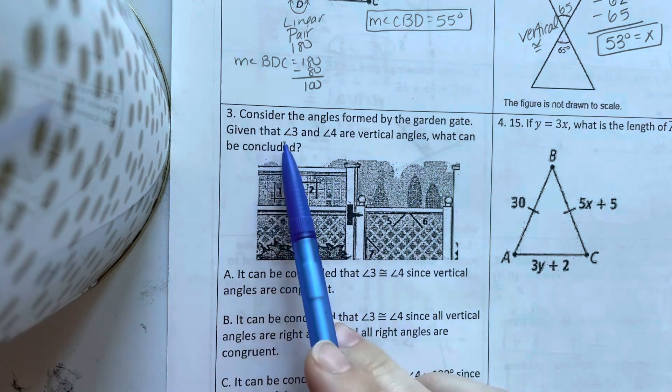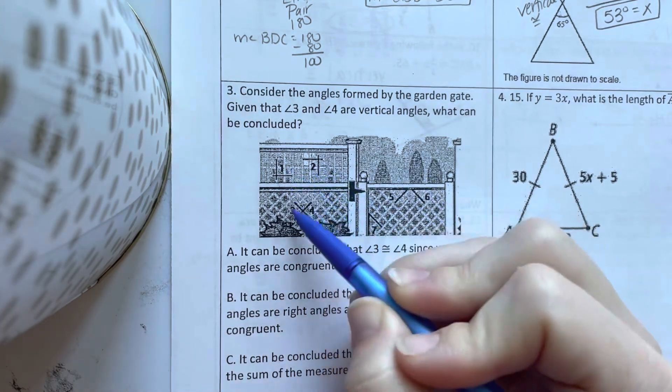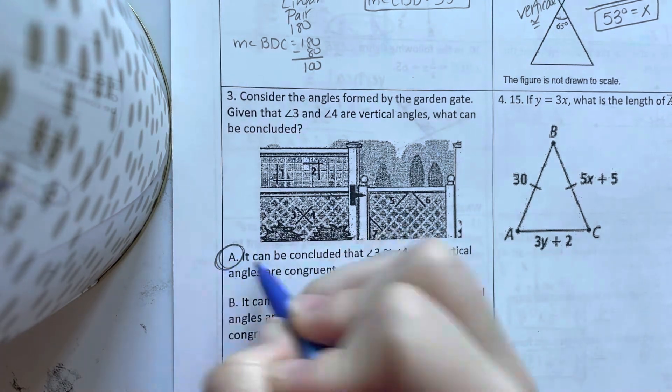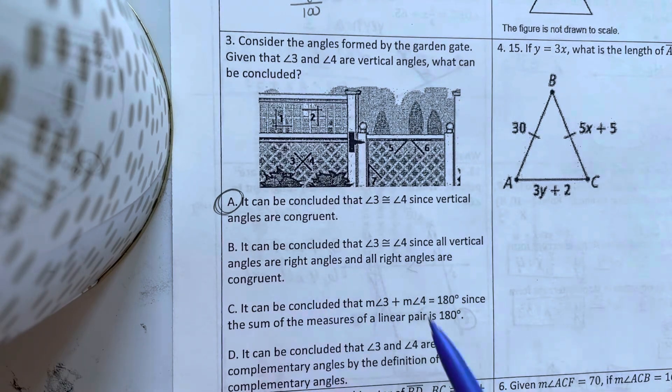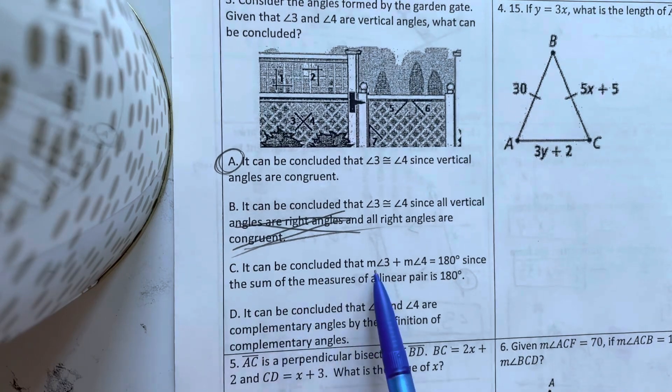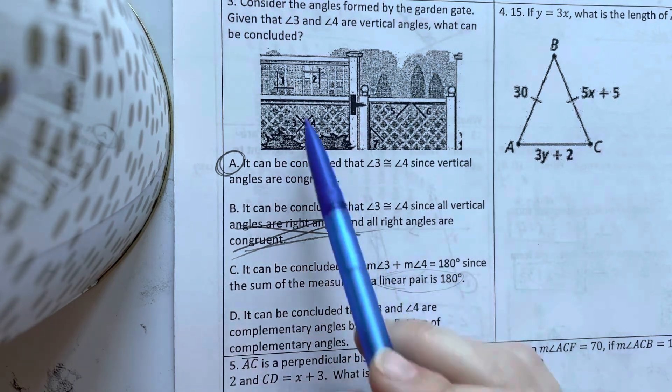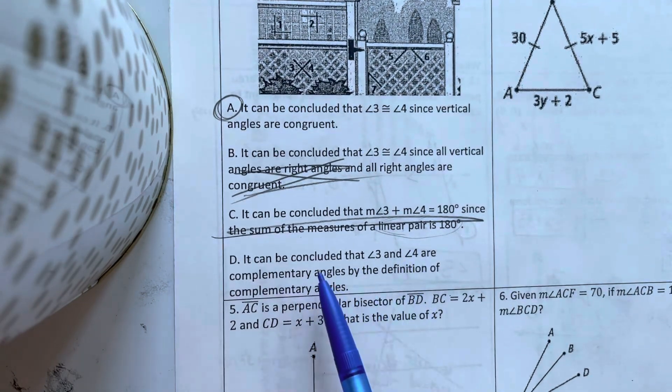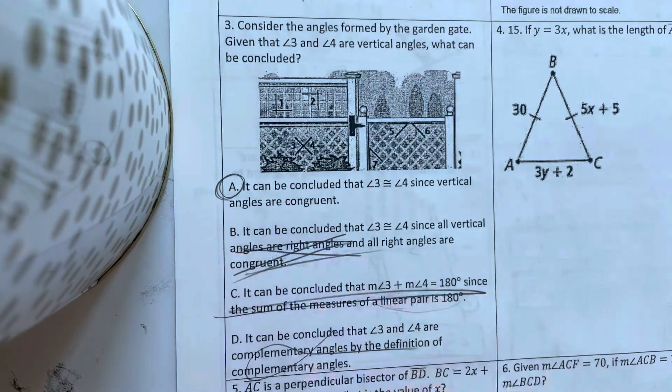Consider the angles formed by the garden gate. Given that three and four are vertical angles, what can be concluded? So I see angles 7, 5, 6, 2, 1, 3, and 4. It can be concluded that 3 is congruent to 4 since vertical angles are congruent. That is absolutely true. It can be concluded that 3 and 4 are congruent since all vertical angles are right angles. No, vertical angles are not all right angles. It can be concluded that angle 3 plus angle 4's measures equal 180 since the sum of measures of a linear pair are 180. Linear pairs do add to 180, but 3 and 4 are not linear pairs. It can be concluded that 3 and 4 are complementary. Not necessarily. I only know they're complementary if I know they're adding to 90. So this is my only true answer.